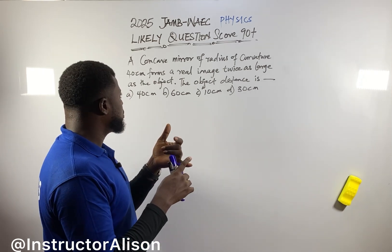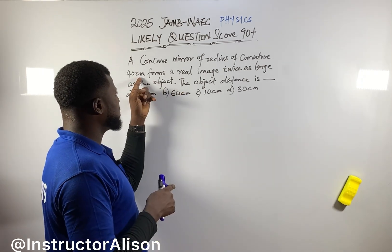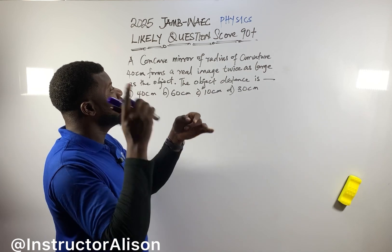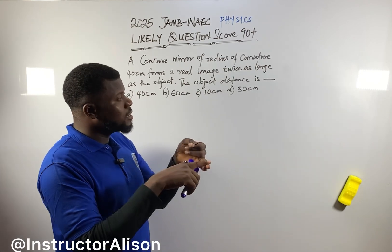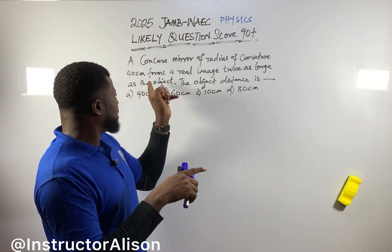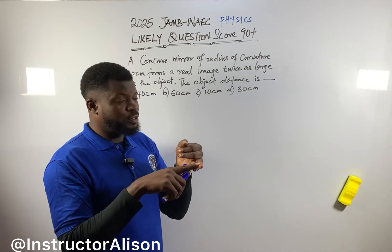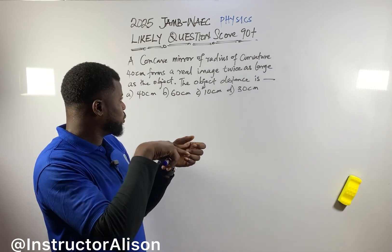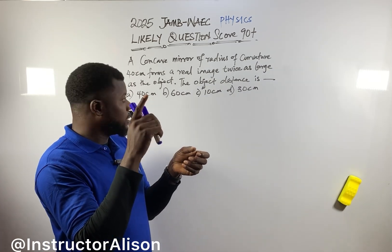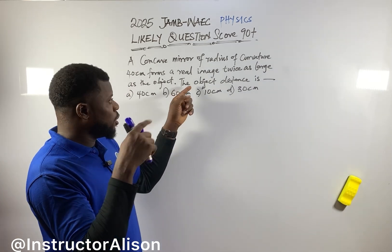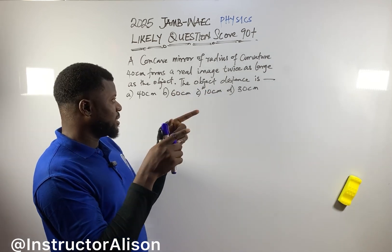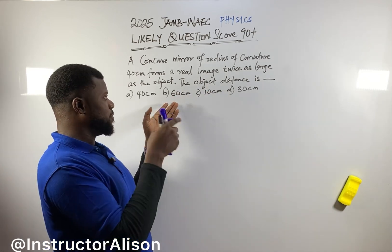They give us 40 centimeters, and it forms a real image twice as large as the object. When they say twice as large, that means they are talking about magnification. From magnification you can find the object distance and the image distance.